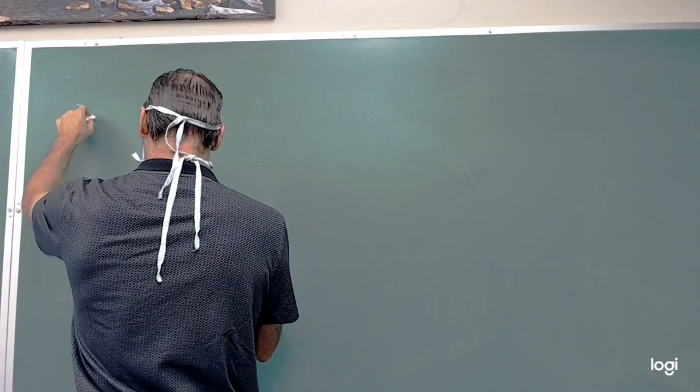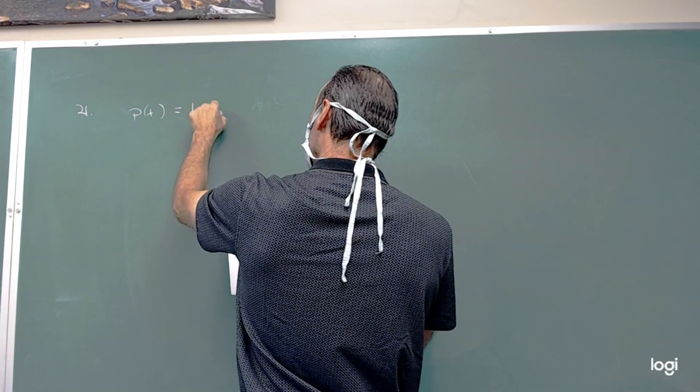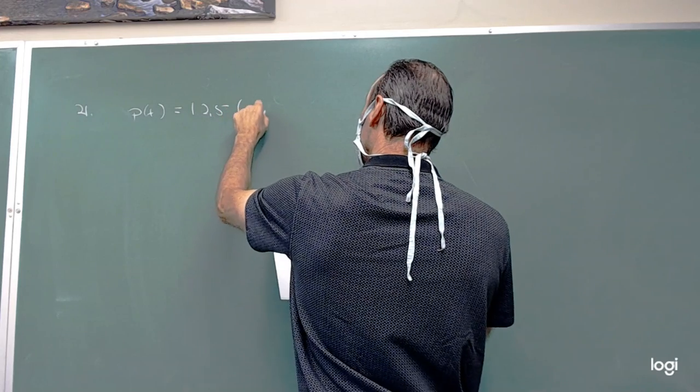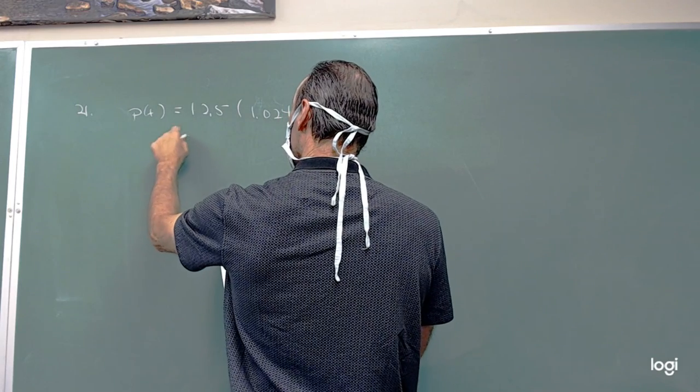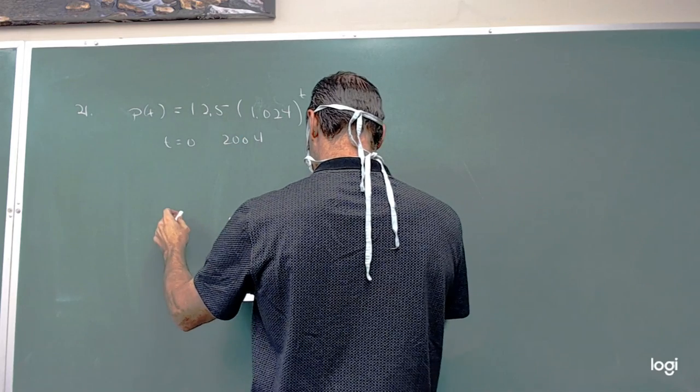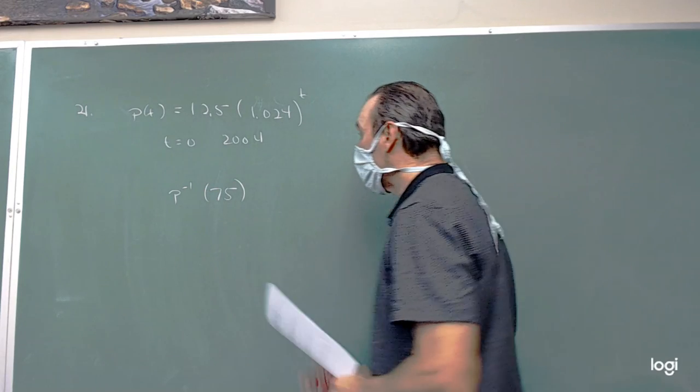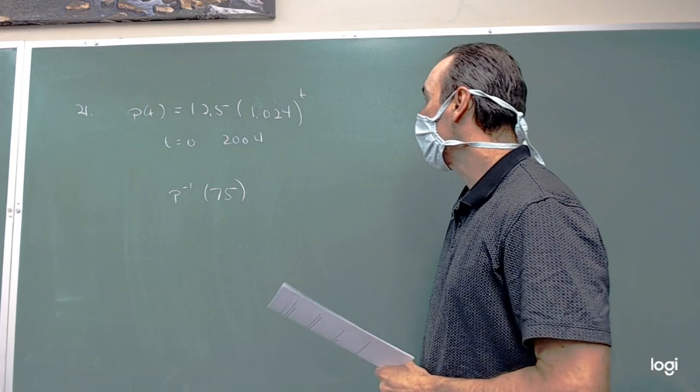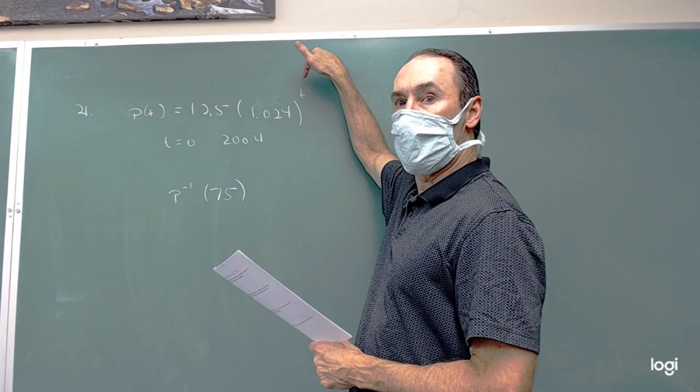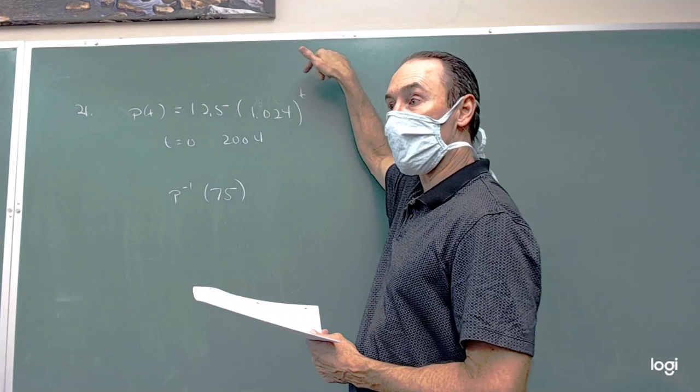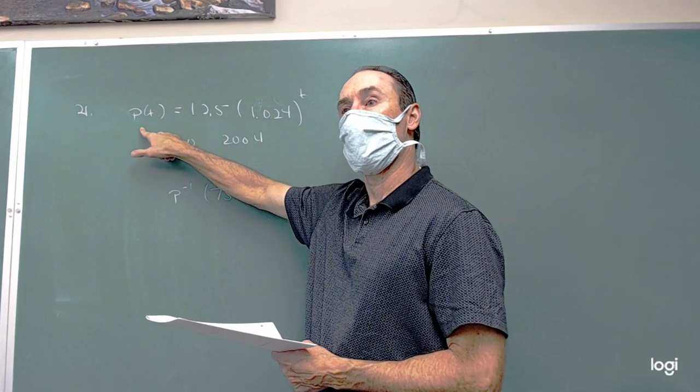The price of an item is given by P of T. P of T is 12.5 times 1.024 raised to the T power, and T equals 0 is in 2004. We want to get the inverse of 75, and it says two decimal places. What we need to think of here is that on the original function, what we're inputting is going to be T, which is measured in what? Years. And what we're outputting is P of T, which is price.